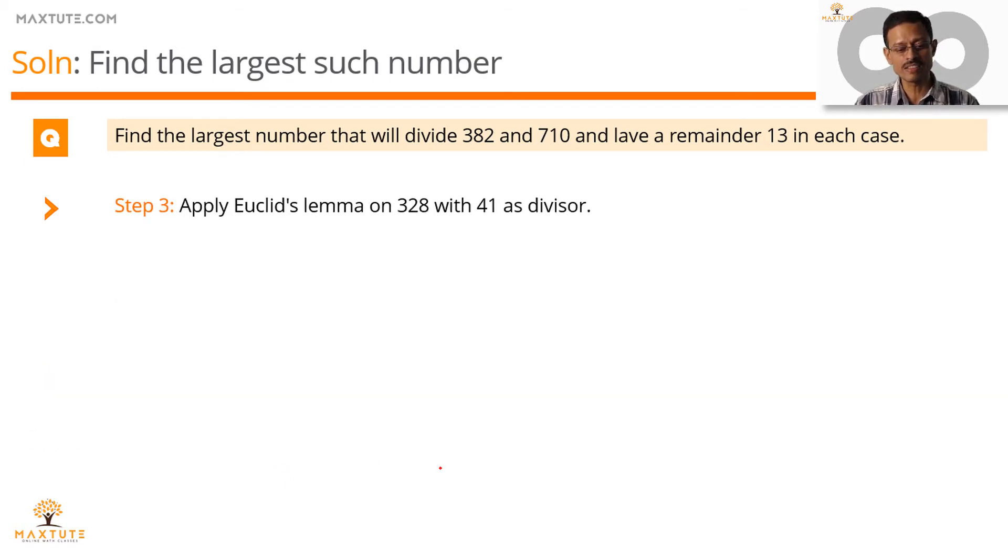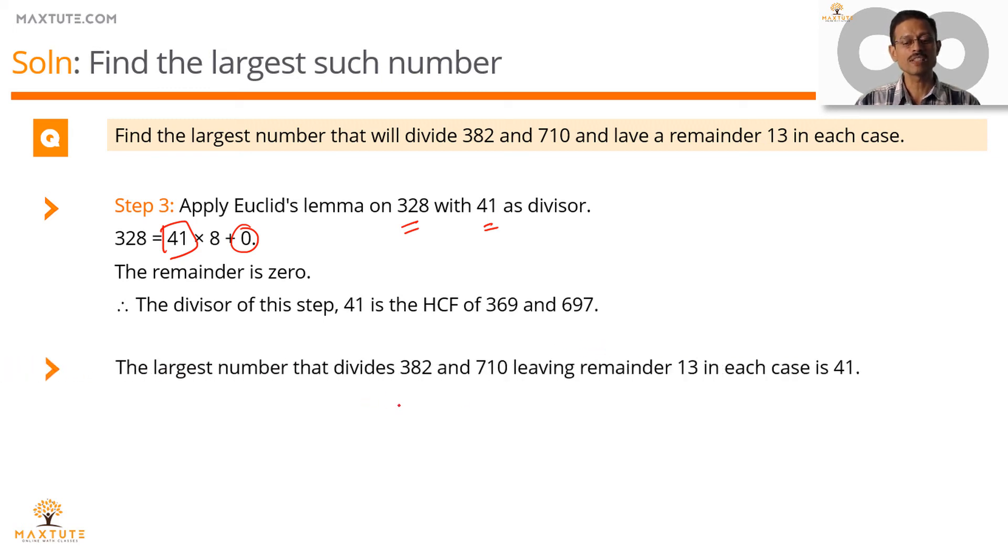So, it's applied recursively a third time. This time, with 328 as the dividend and 41 as the divisor, the remainder in this step is 0. The remainder is 0. The divisor of that step is the HCF. 41 is the HCF of 369 and 697. 41 is the largest number that will divide these two numbers, leaving a remainder of 13 in each case.